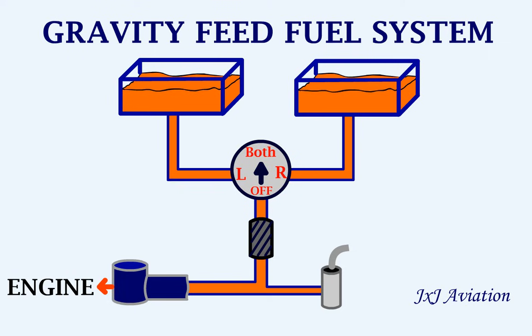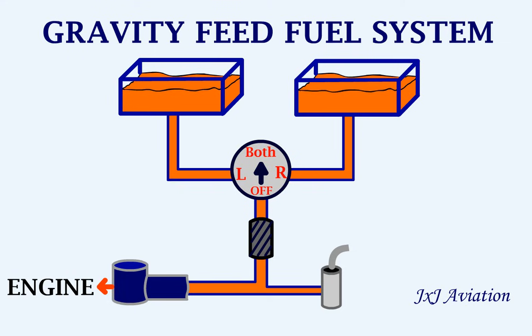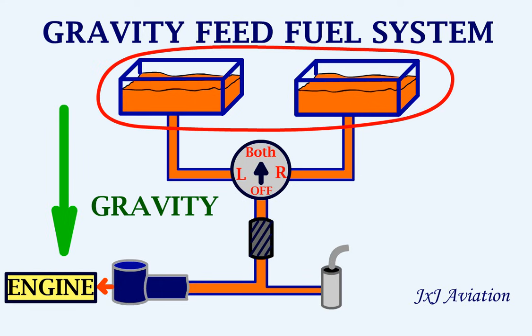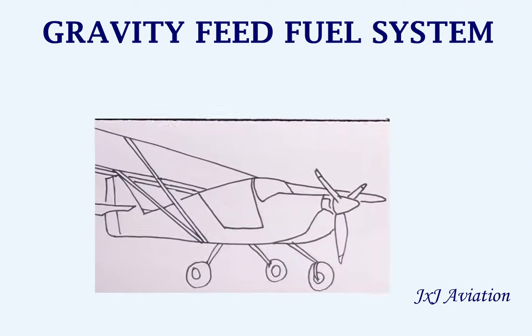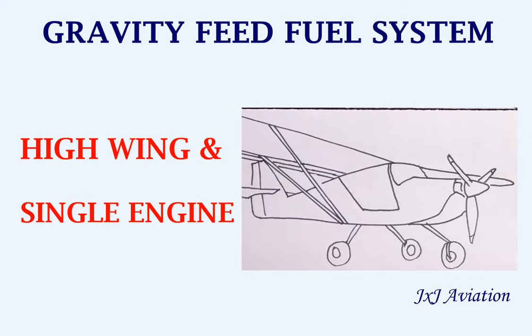As we can see here, this is a simple fuel system. In this system, for the fuel to reach the engine it must flow downward with the help of gravity. So the fuel tanks have to be placed at a higher level compared to the other components. This type of fuel system can only be used in a high-wing single engine aircraft.